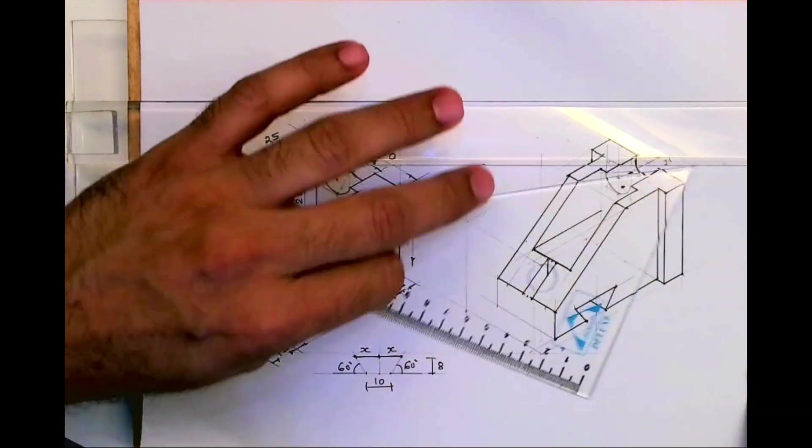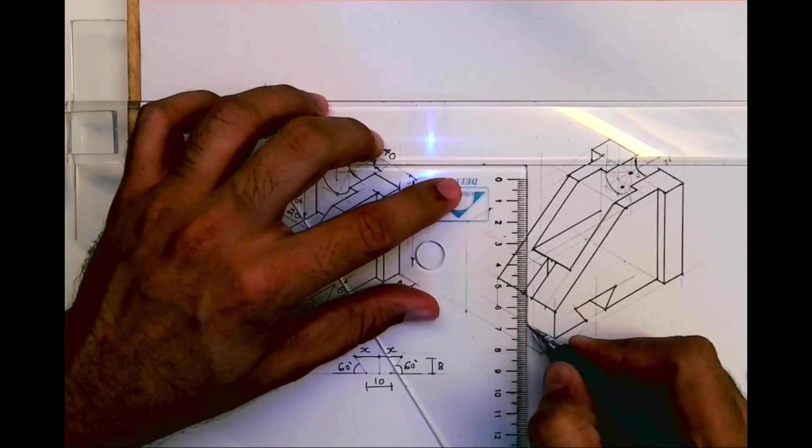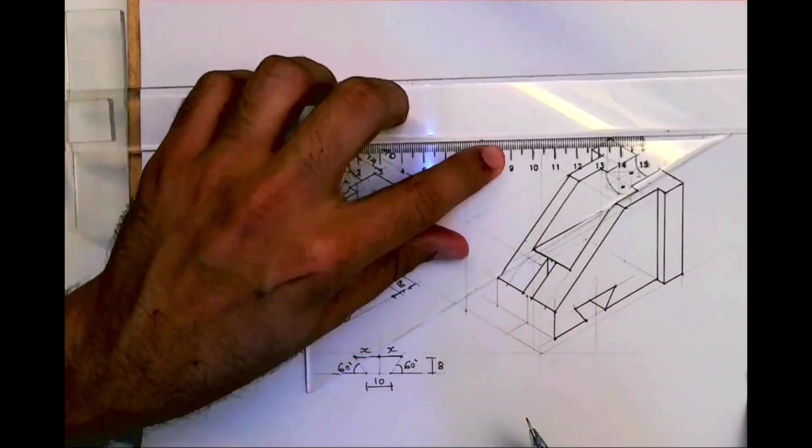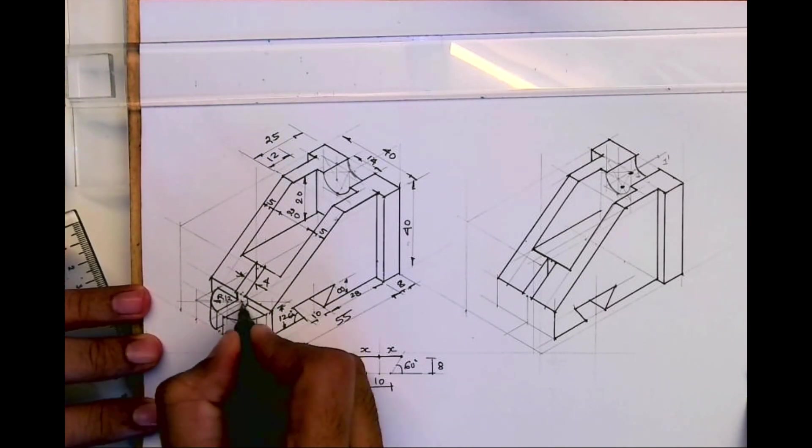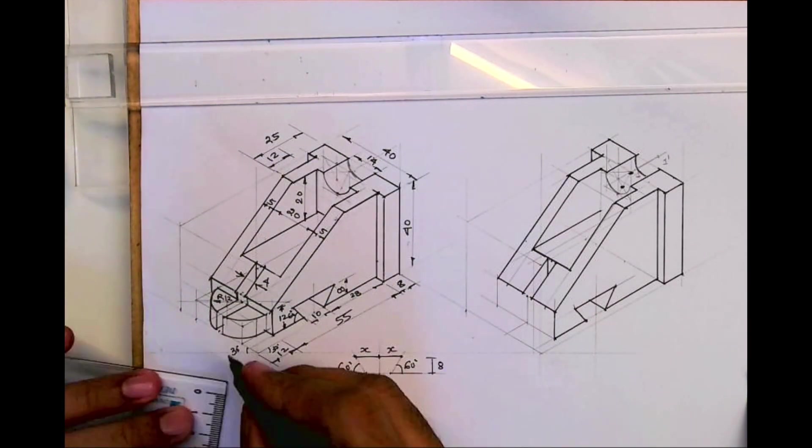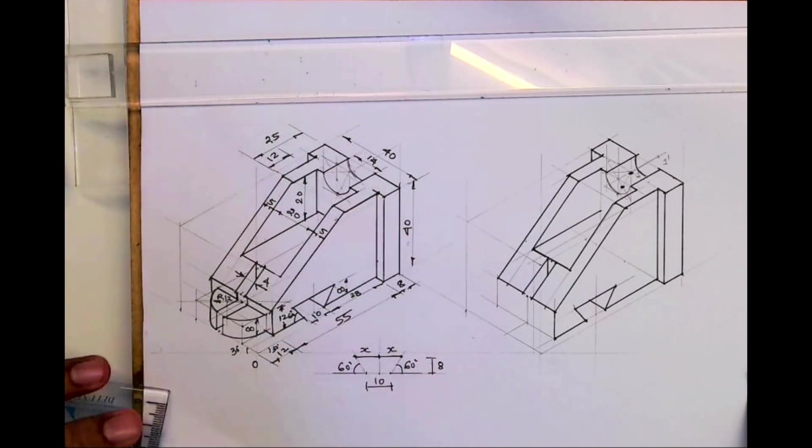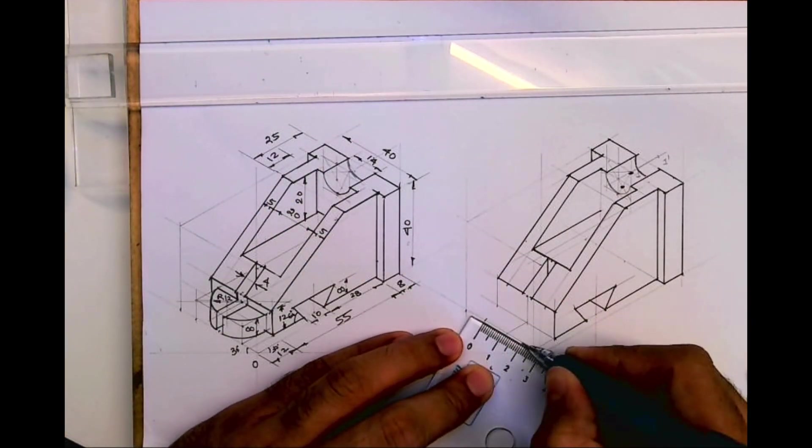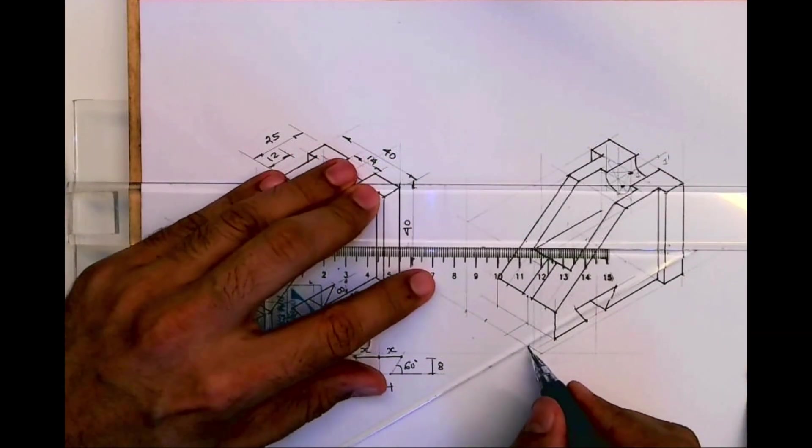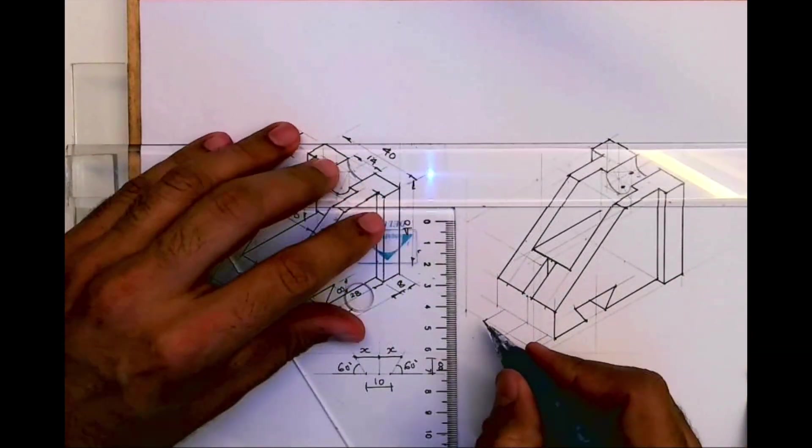Now this is the inside line. Now we need to draw a circle. To draw the circle we need to find the midpoint. See, this radius is 12 and this height is 8. So from whatever, what we will do? From here I will take 12-12 on both the sides. I'll go inside and I'll go up by 8mm.